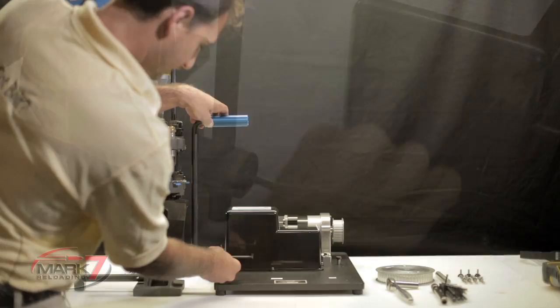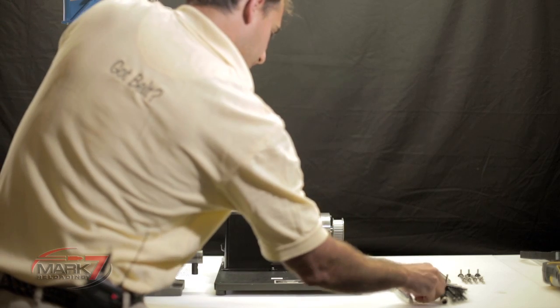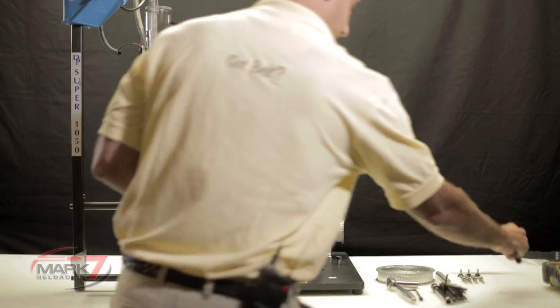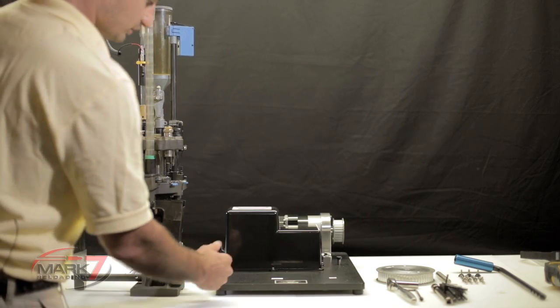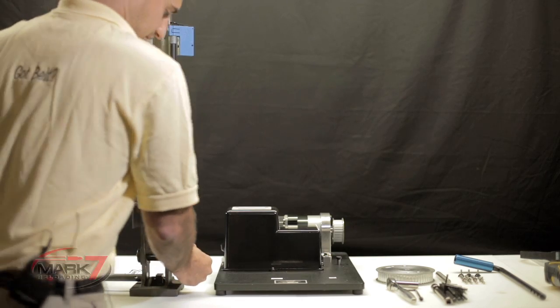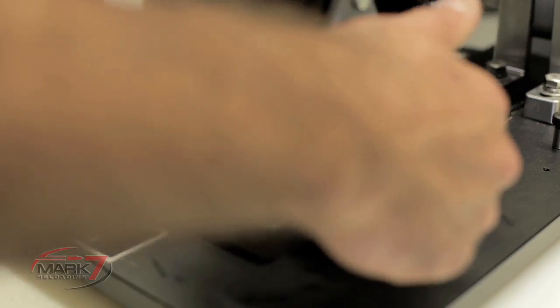Back the set screw completely out as we won't be using that. Remove the handle. Place one hand on the case feeder tube and the other hand on the Dillon 1050 input shaft and move the unit to the base plate.